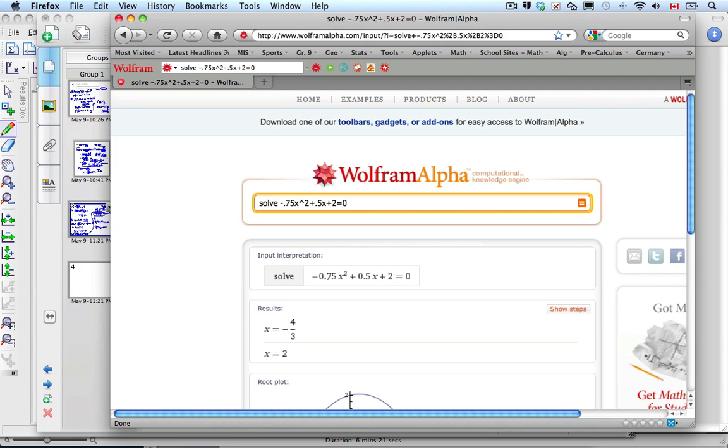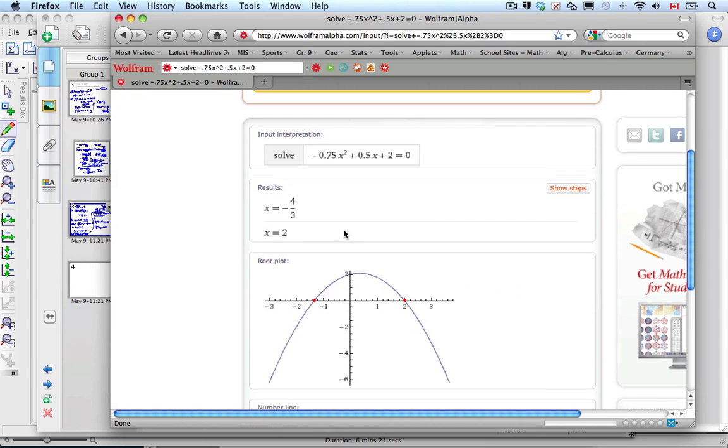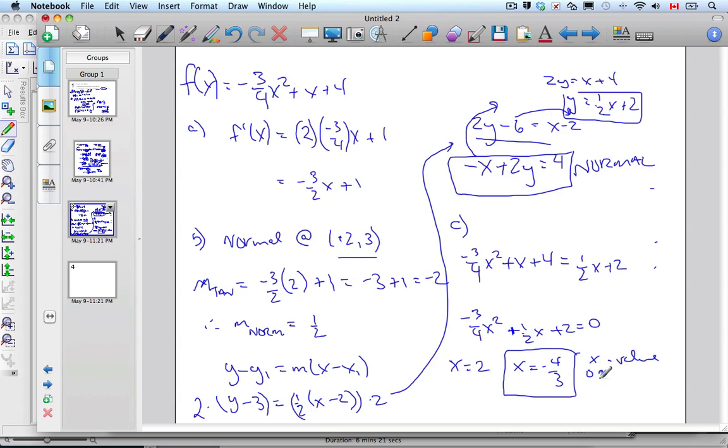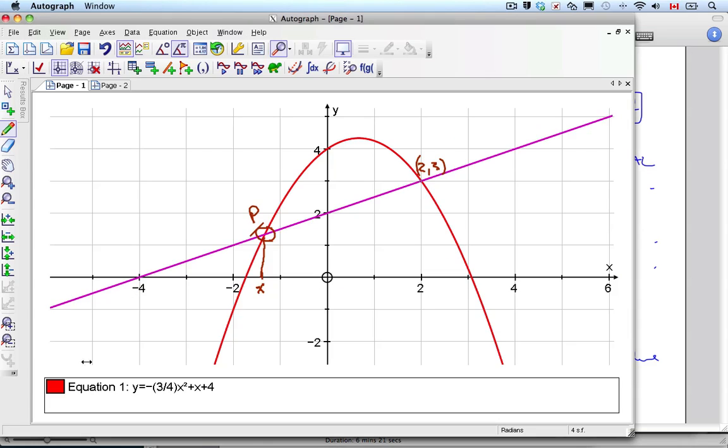Yes, it does. So, I know one of my answers was 2. One of my answers was 2, which I already knew from the point 2, 3. And the other was negative 4 thirds. So, I know that x equals 2, and x equals negative 4 thirds. This is the x value of p. So, while I look right here, and this value here is negative 4 thirds.